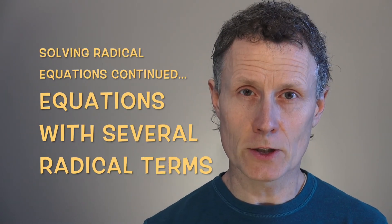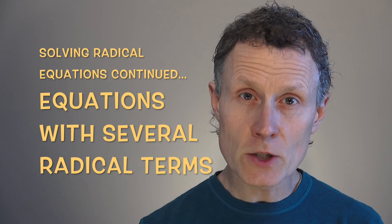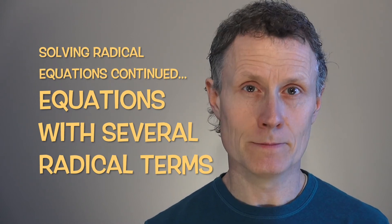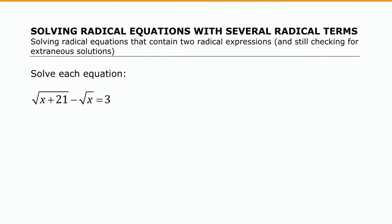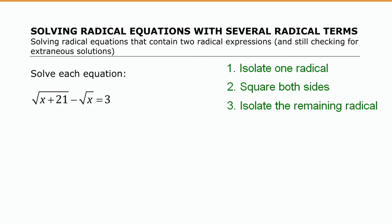In this video we are going to continue looking at solving radical equations. The focus here is on equations that have more than one radical in them. We're going to use a similar approach to before, except we're going to have to repeat the process a couple of times — isolate one of the radicals, square both sides, then isolate the remaining radical and square both sides again, and then check our solutions at the end.